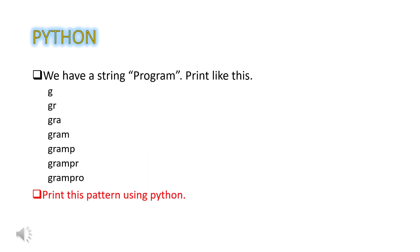Python programming questions. They have given a string program — it should print like GGR, GRA, GRN, GRAMPRO, PGRAMPR, GRAMPRO. The solution is to use a for loop, find the length of the string, and starting from the middle (n divided by 2), print the nth element — that is the middle element.